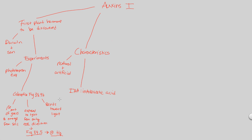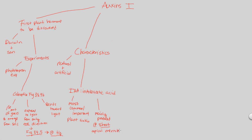What is the purpose of indoleacetic acid? It is the most common and most important plant auxin. It is mainly synthesized and produced at the shoot apical meristem. Remember, there is also a root apical meristem, but here we're specifying the shoot apical meristem — because Darwin established that this hormone functions at the tip of the plant, which corresponds to the shoot.